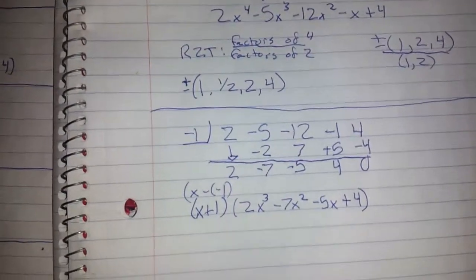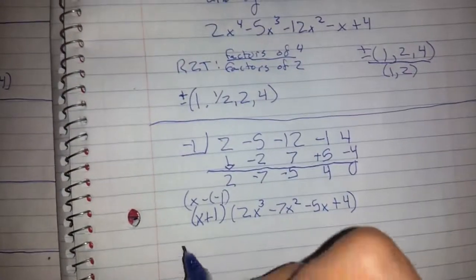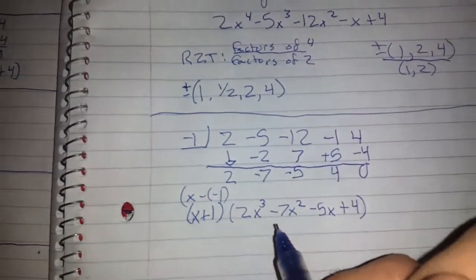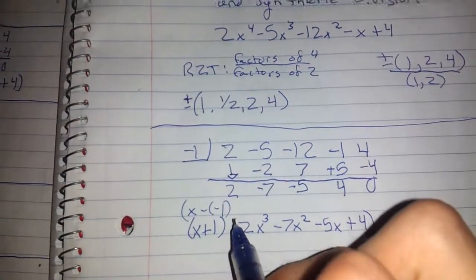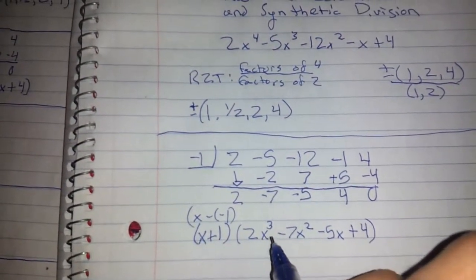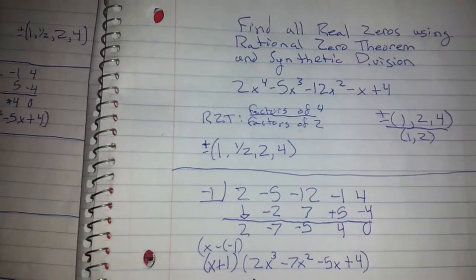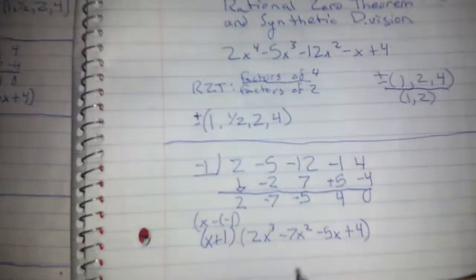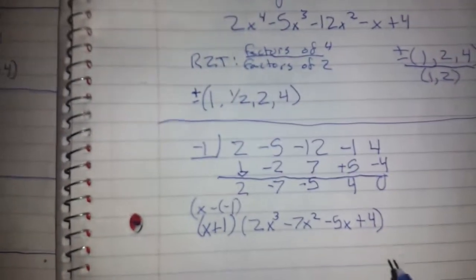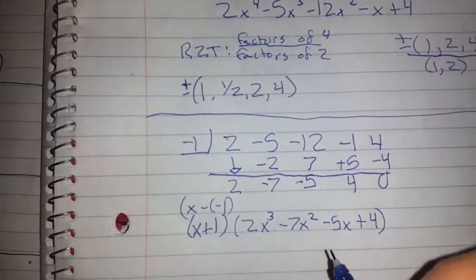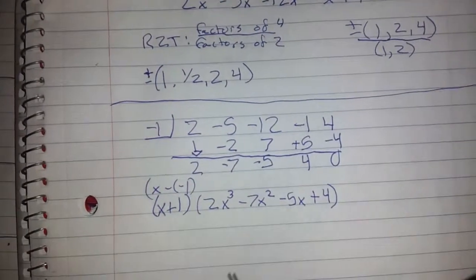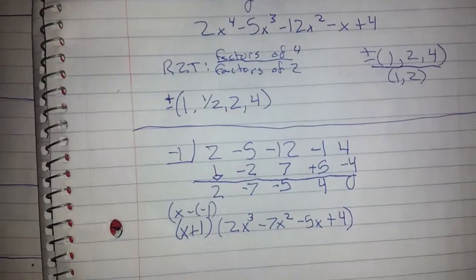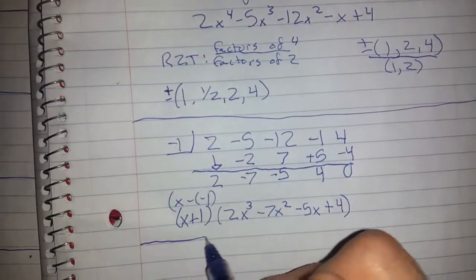That's going to be our dividend and quotient together right there. Or divisor and quotient, I'm sorry. Through this, we can't factor this out yet. And we're looking for all the real zeros. So we already have 1, which is negative 1. And we know that there's going to be at least 1 more, or 2 more, or 3 more. I'm not entirely sure. That's why I'm not teaching math full time, I guess. But yes, let's go on to the next step.